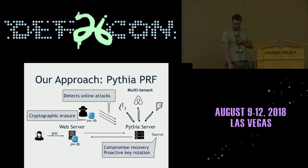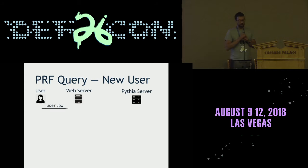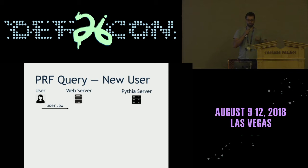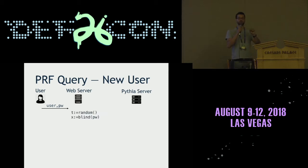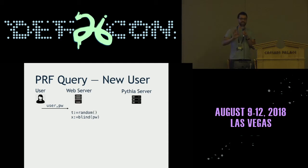Let's see how it works. When a new user logs onto a website that's using Pythia: the user logs in the normal way — username, password, sent via HTTP POST, protected by TLS. The web server chooses a random value we'll call T — this is going to be a user ID. It then takes that password and passes it through what's called a cryptographic blinding function. Think about this as encryption — it's actually key-homomorphic encryption. Just know that this protects the password.